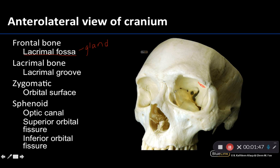Moving on to the lacrimal bone — the lacrimal bones are paired bones that are, other than the ear ossicles, the smallest bones of the body, give or take some of your sesamoid bones. Right here is your lacrimal bone that I just outlined, and probably the most dominant thing you can see on the lacrimal bone is this depressed area referred to as the lacrimal groove.